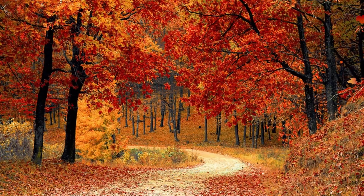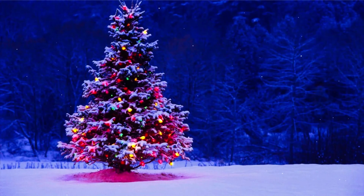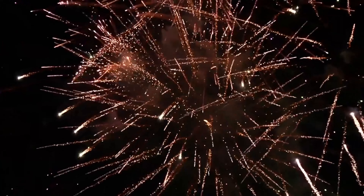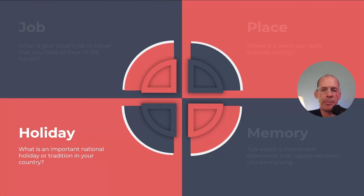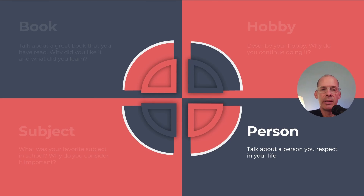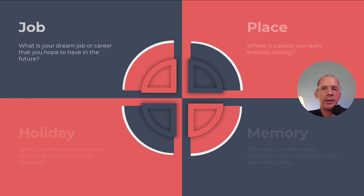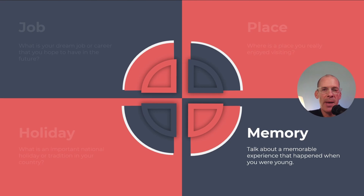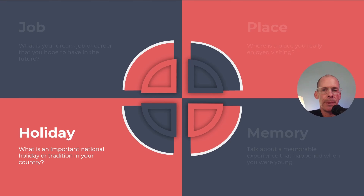And the last core idea is Holiday. What is an important national holiday or tradition in your country? In America, we just passed Thanksgiving. Christmas is coming, and we also have New Year's. Whatever that tradition is, you want to learn to speak about it. So we have eight different core ideas: Book, Hobby, Person, Subject, Job, Place, Memory, Holiday. Now let's take a look at each of them one by one and learn how to speak about them.